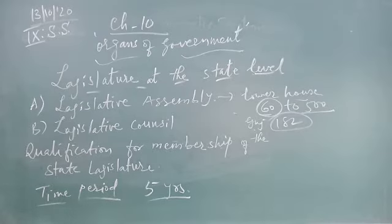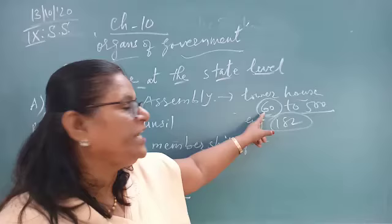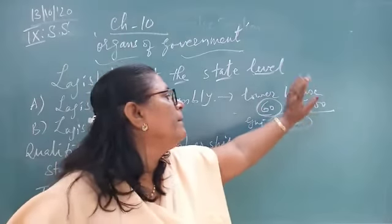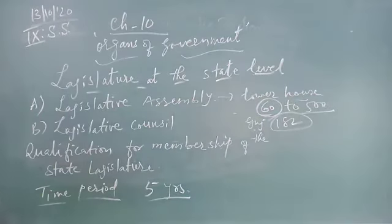As per the constitutional provision, the minimum number of members of the legislative assembly should be 60 and the maximum should be 500, meaning the number should be between 60 and 500.